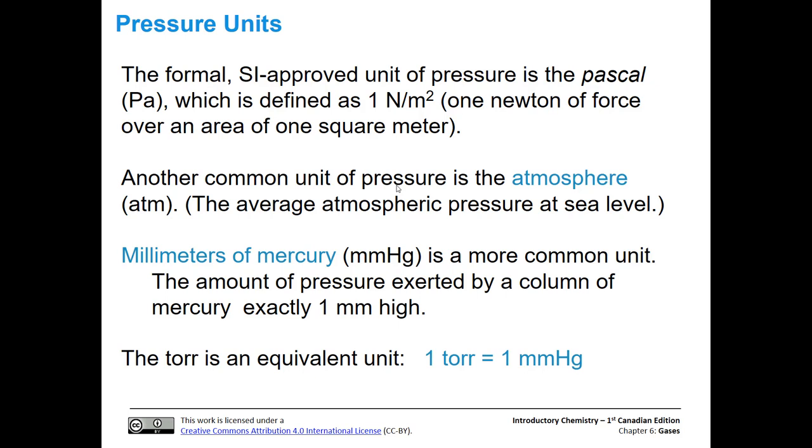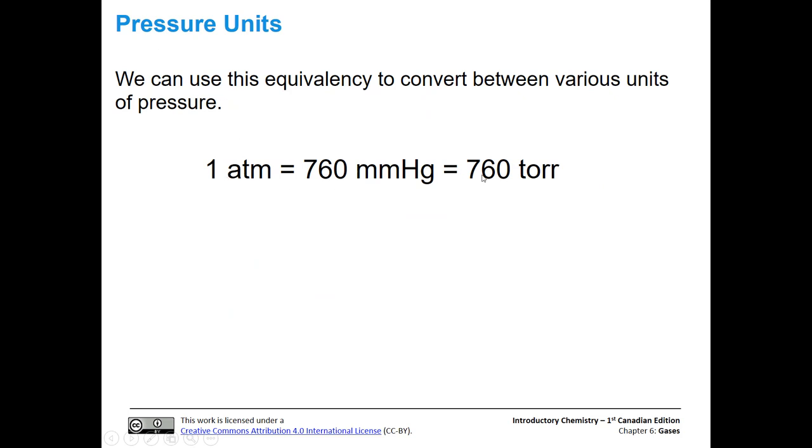That unit was actually renamed to the torr, which is an equivalent unit. So one torr equals one millimeter of mercury. Here is the equivalency - these are the main units for pressure we're going to use in this class: one atmosphere, 760 millimeters of mercury, and 760 torr are all equal to each other. We can use any two to construct equivalencies and convert pressure units.